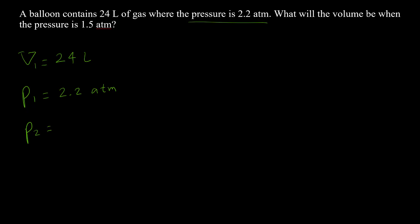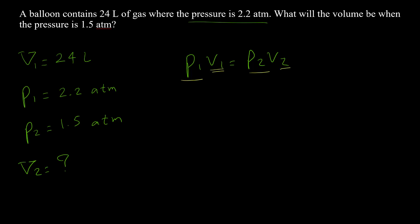We want to find the final volume v2. The formula we need is p1·v1 = p2·v2. One important note: we must have the same units for pressure on both sides, and the same units for volume on both sides — it doesn't matter what the unit is, as long as they match. In this case, both pressures are in atm, so there is no problem. p1 = 2.2, v1 = 24.